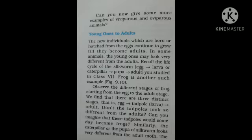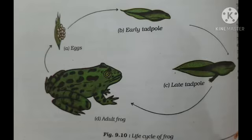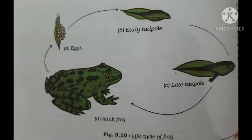The frog has four stages: egg, tadpole (which is the larva), and adult. When the egg hatches, a larva comes out which is called the tadpole, and it resembles a fish completely. Because external fertilization happens in frogs, the tadpole lives in water and looks like a fish. After that, drastic changes happen in the tadpole, and it converts into the adult frog, which is able to jump and also swim.